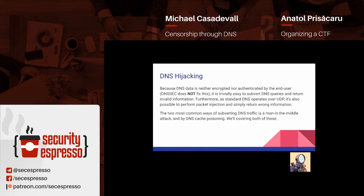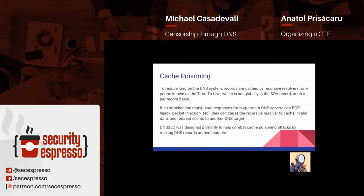Because DNS works over UDP, it is possible if an attacker controls layer two of the network to simply do packet injection and return false requests. Covering cache poisoning: to prevent repeated load on DNS servers, all records are cached for a certain time known as the time to live, which is set globally in the SOA record or can also be set on a per-record basis. If an attacker can manipulate responses from an upstream DNS server — by BGP hijacking or packet injection — they can cause recursive resolvers to cache invalid information and redirect clients to another target. DNSSEC was primarily designed to combat cache poisoning attacks by making DNS records authenticated, but it has some critical flaws we're going to get into.